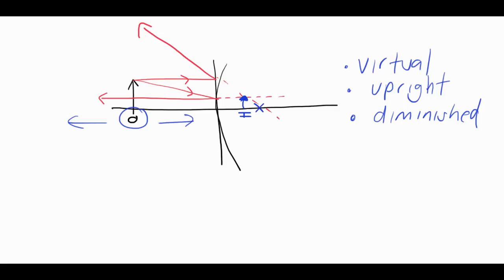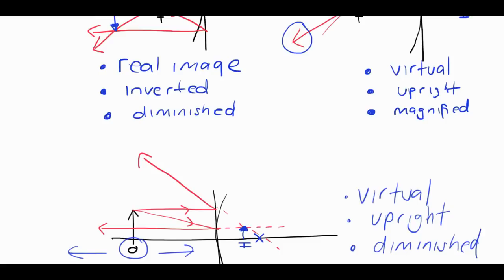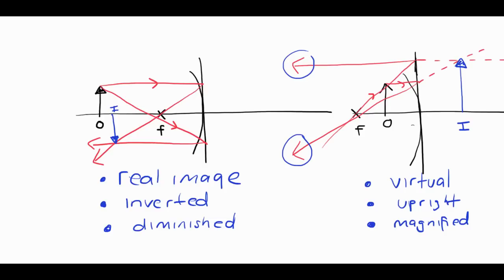Applications-wise, convex mirrors are typically used anywhere you want the rays to diverge. Examples include security mirrors where you want to see around corners, and side mirrors of cars for the same reason — any situation where you want a wider range of view. That pretty much covers everything at achieved, maybe even merit level for concave mirrors and ray diagrams. In the next tutorial, I'll talk about how you can use the formula to work out unknowns such as image position, the size of the image, and the magnification.